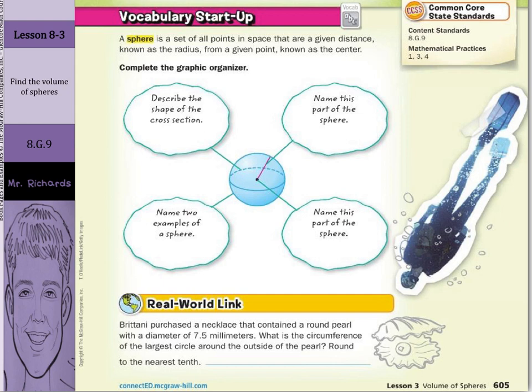We'll complete the graphic organizer. Describe the shape of the cross section — that's a circle. Name this part of the sphere — that red line is the radius. Name this part of the sphere — it's pointing right to that center point, so it's the center. And two examples of a sphere could be a basketball, maybe the moon.